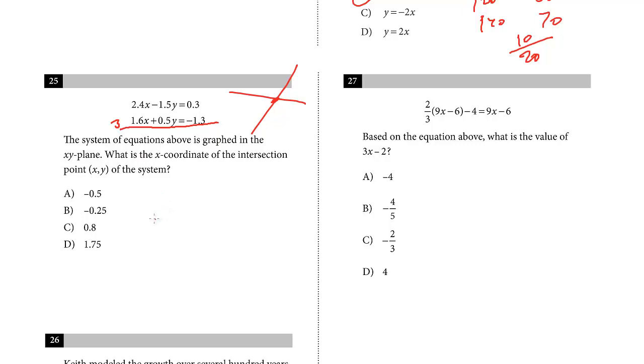So 3 times 1.6 is 4.8, so that's going to be 4.8X plus 1.5Y, and you could use your calculator here, but these aren't too difficult. So 1.3 times 3, that's 3.9, so it's going to be negative 3.9. So now I just add the two, right? Here's the original, I just add them together. We know the middle ones are going to cancel out.